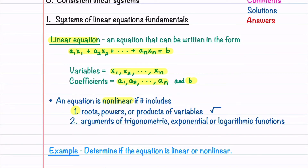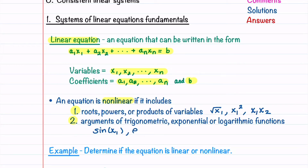Nonlinear terms could look like the square root of x1, x1 squared, or the product x1 times x2. A nonlinear equation may also have arguments of trigonometric, exponential, or logarithmic functions. These may look like sine of x1, e to the x1, or ln of x1.